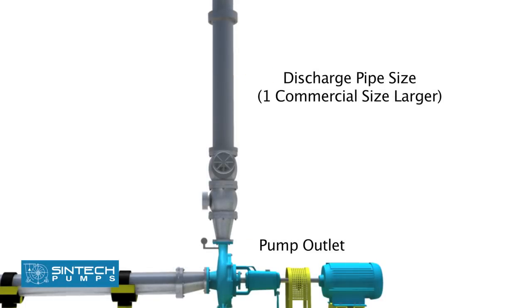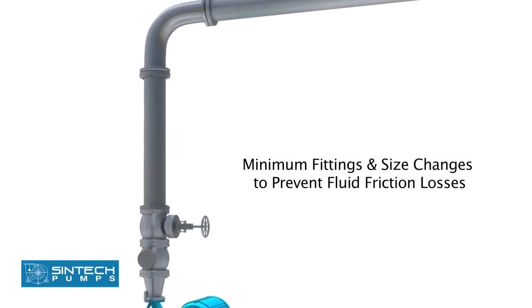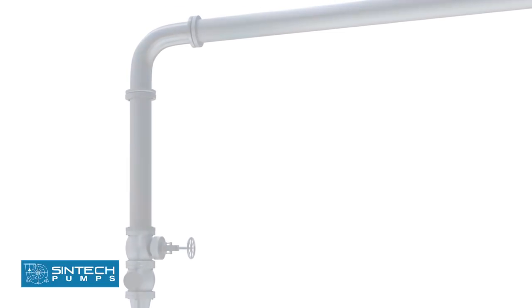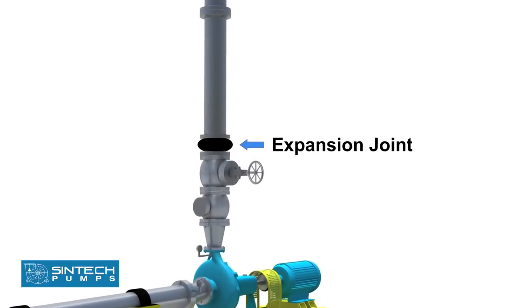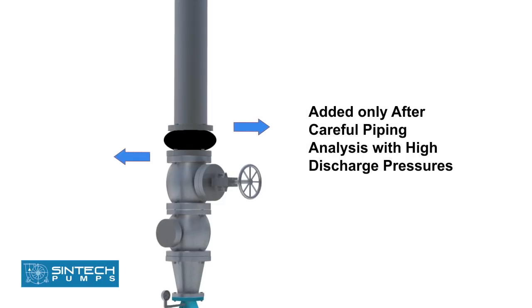Discharge pipe size should be at least one commercial size larger than the opening of the pump outlet. The number of fittings and size changes should be minimum to prevent fluid friction losses. Expansion joints may be used only after a careful piping analysis, especially when the discharge pressures are on the higher side.